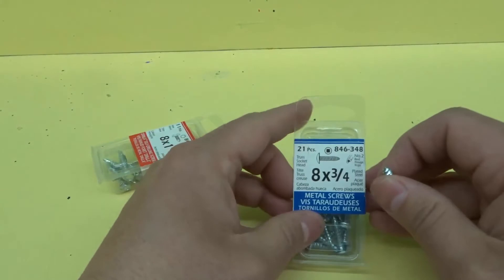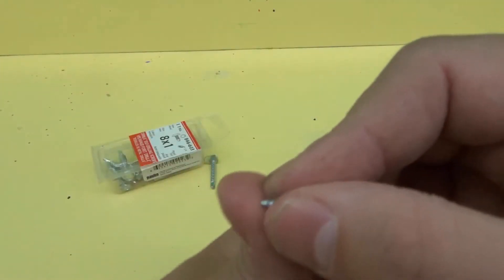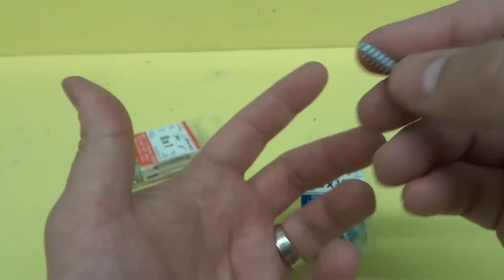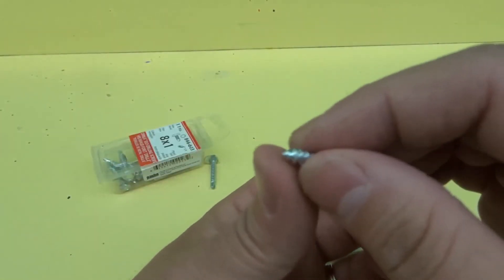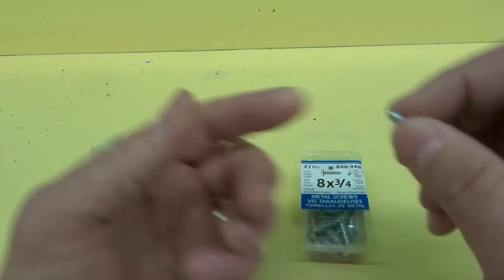This is a metal self-tapping screw, meaning you'll have to drill a pilot hole first to get it to tap into the metal. There are exceptions, but for the most part you need to drill a pilot hole to tap this in.